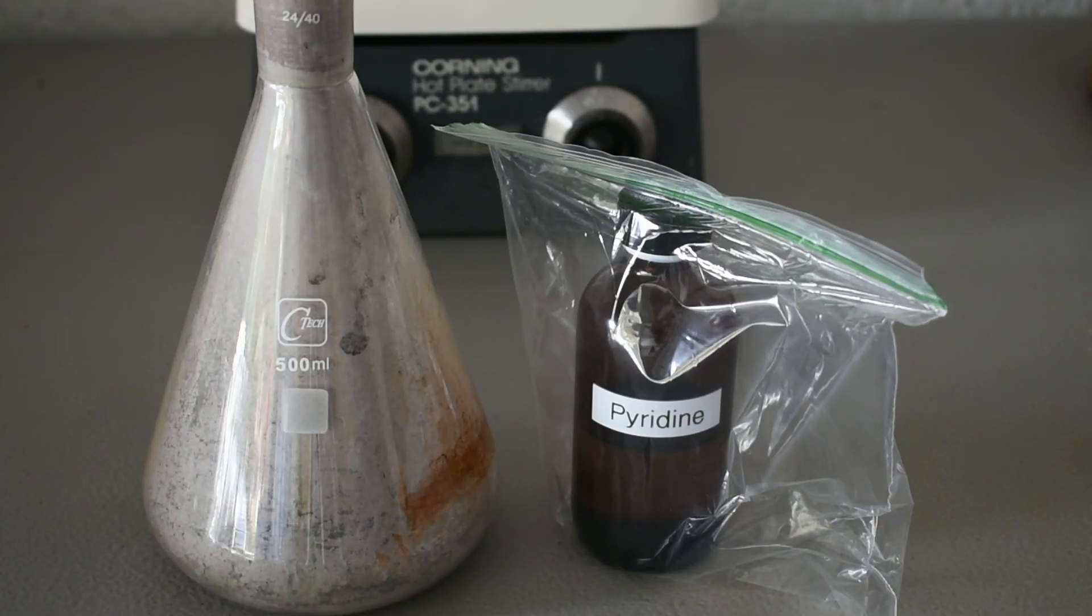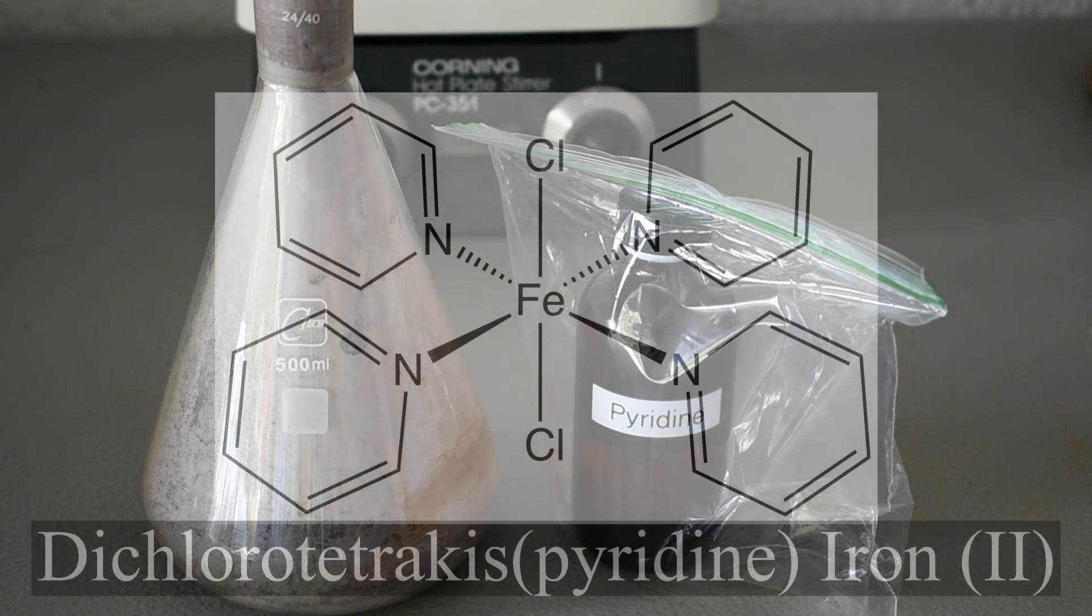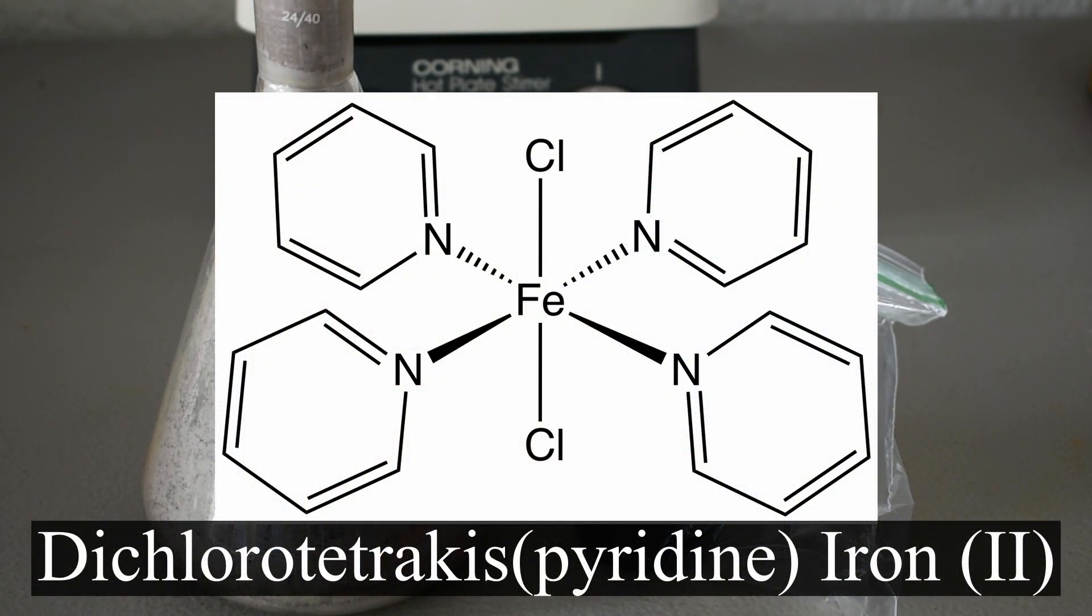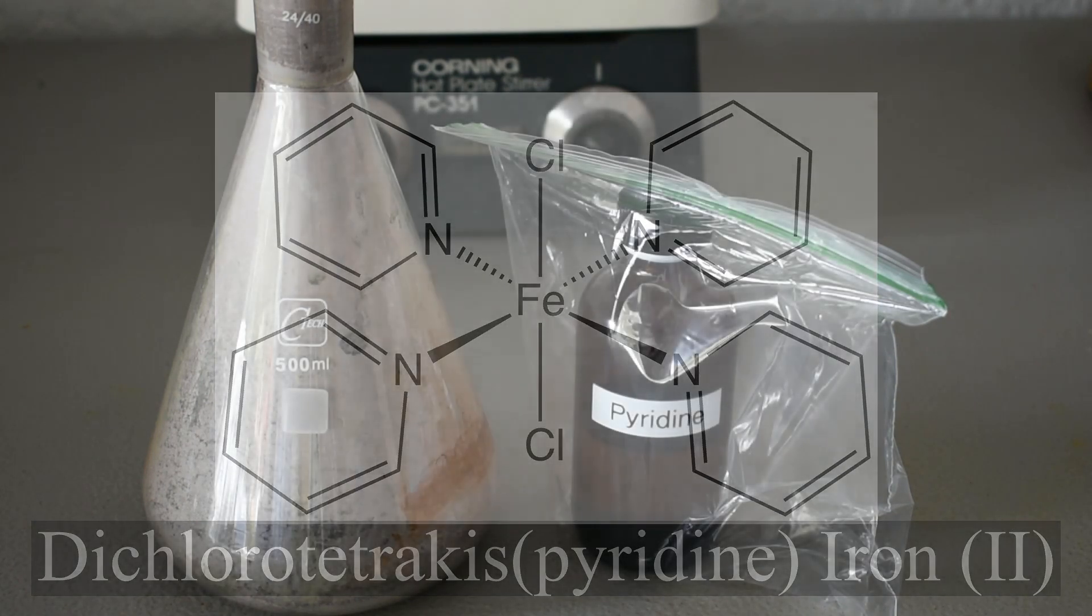Hello everyone, welcome to a new video. Today we're going to be making a mouthful of a compound called Dichlorotetrakis pyridine iron 2, which is basically just iron 2 chloride with 4 pyridine ligands attached to the iron.